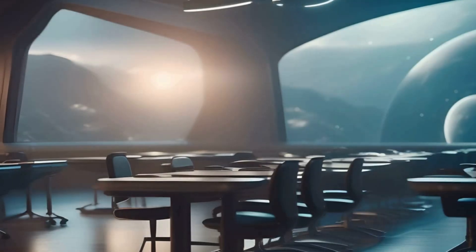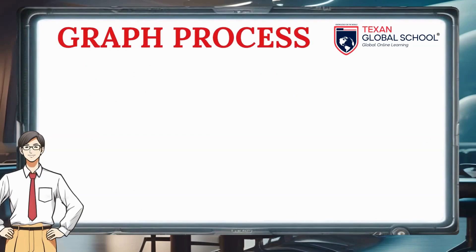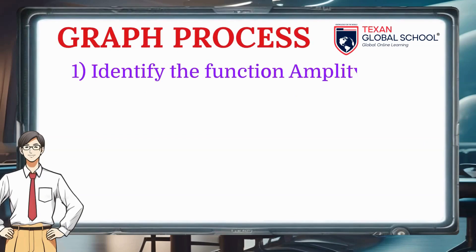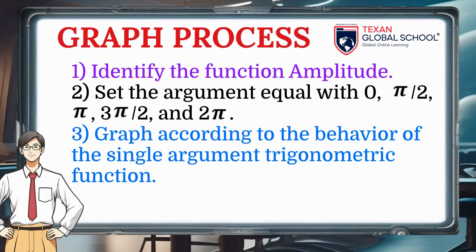The process for graphing involves first identifying the amplitude of the function. Next, set the argument equal to 0, π/2, π, 3π/2, and 2π. These are the elements of a cycle with exact values of the function, which will determine the points of the cycle. Finally, graph according to the behavior of the single-argument trigonometric function.